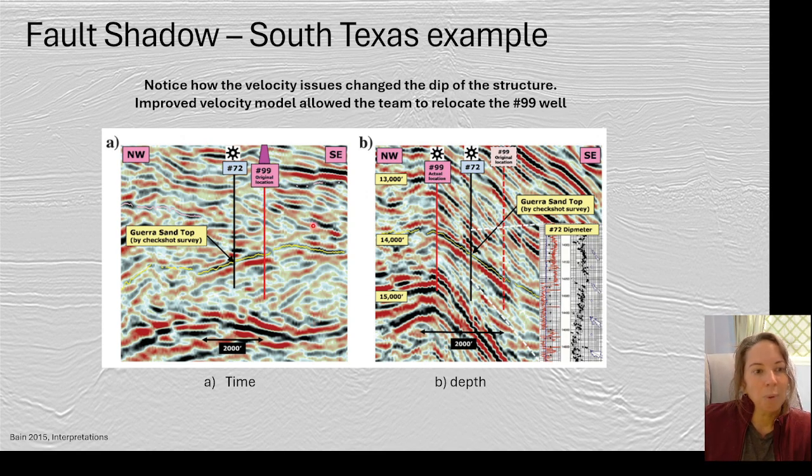This is an example of an area where we've got a fault with very strong velocity contrast on either side of it. When we look at the data in time, we've got our 72 well, which was gas bearing, super exciting. The original plan was to drill up dip of it to capture those remaining reserves that we weren't able to get before. But when they recognized there's a fault nearby, let's migrate this, we convert this time data into depth data. What they actually noticed is that the structure wasn't dipping up, it was dipping down in that area. So if they drilled that original plan, they would have been drilling down dip, and it would have been an economic failure. Instead, once they converted it to depth, they were able to better pick a new location. That's that 99 actual location shown here, which ended up being a nice productive gas well.